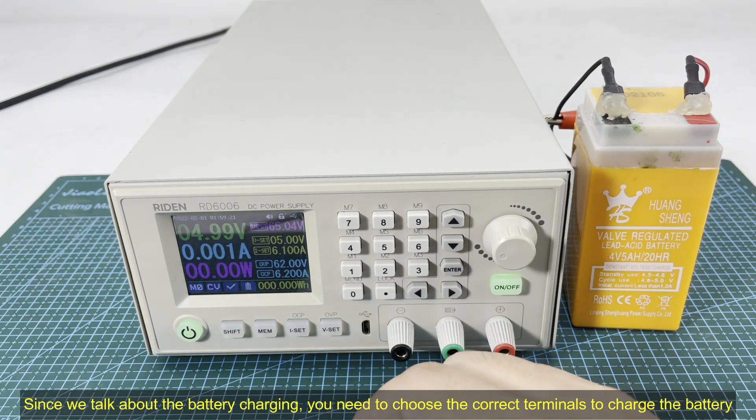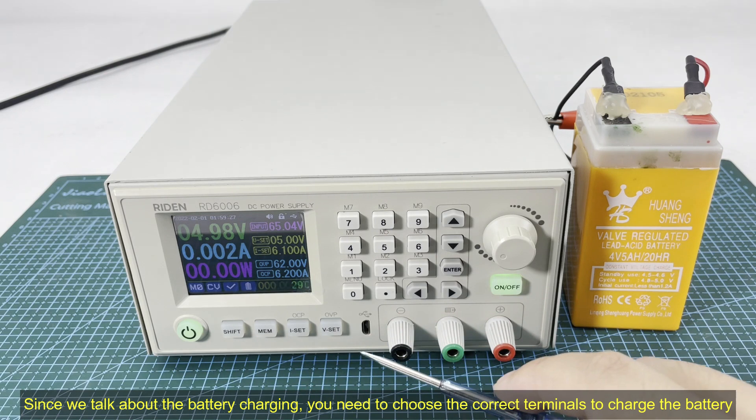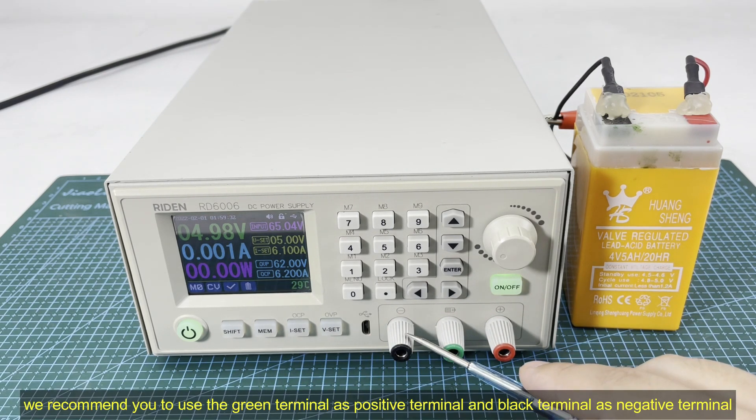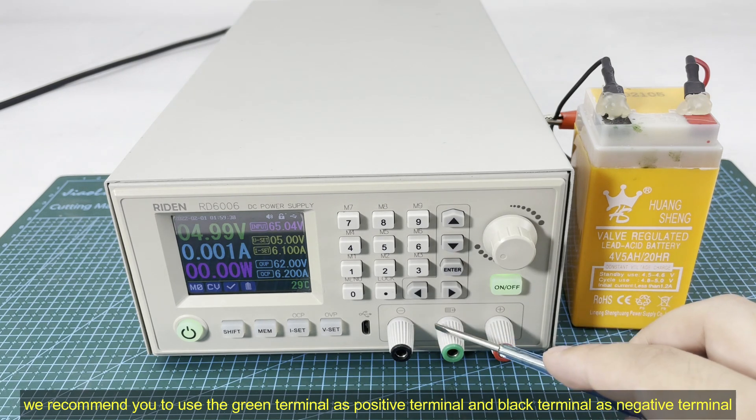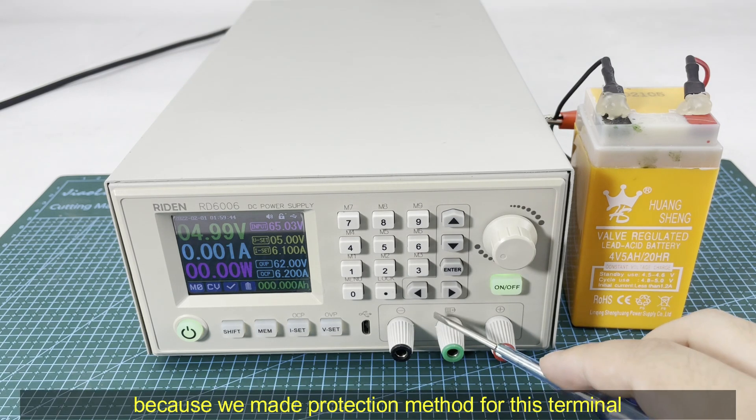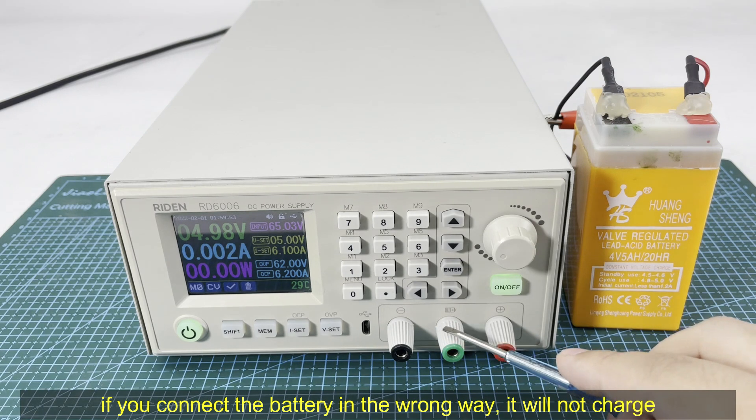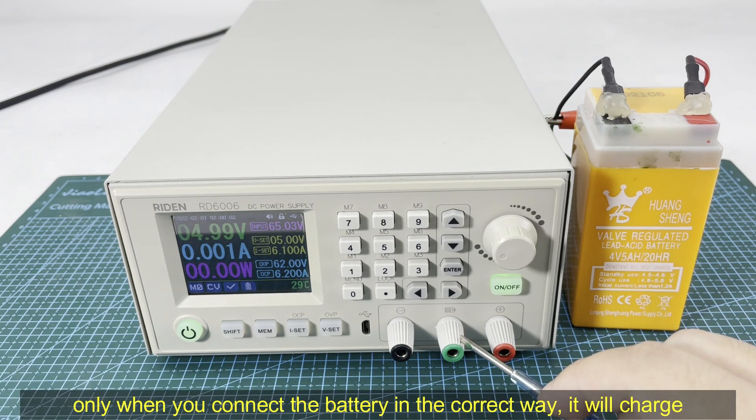Since we talked about battery charging, we can go to the second question. You need to choose the correct output terminals to charge the battery. We recommend you use the black terminal as negative terminal and the green terminal as battery charging positive terminal, because we made a protection for the terminals. If you connect the device in the wrong way, it will not charge the battery. Only when you connect the battery in the correct way and turn on the output will it work.